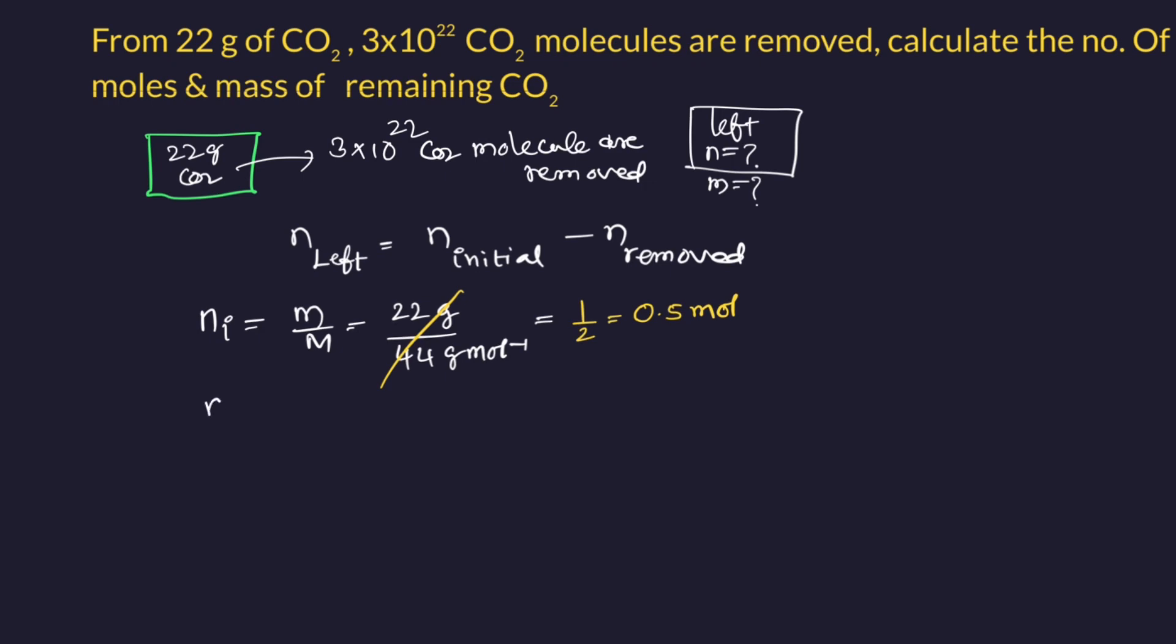Similarly, number of moles removed equals number of entities divided by Avogadro number. Number of molecules given is 3×10²² CO2 divided by 6.022×10²³ CO2 per mole. Then CO2 cancels, this becomes 10 power 1 left.